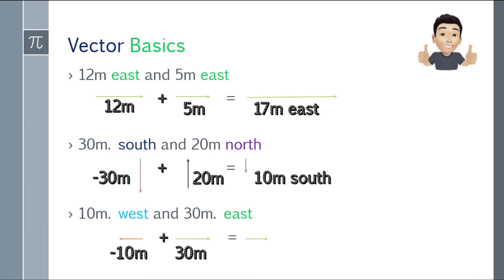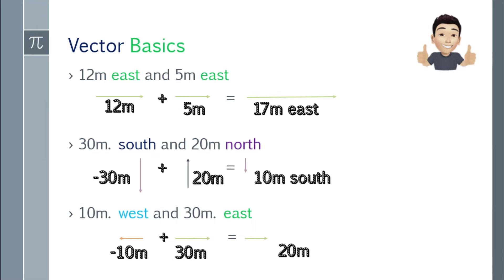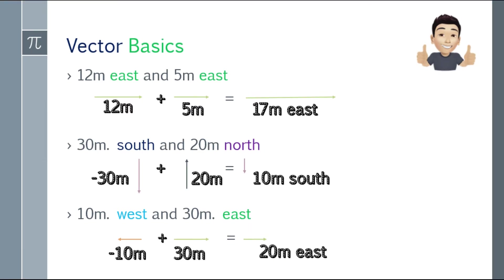Next, we have 10 meters west and 30 meters east. Remember, the west 10 meters needs to be negated — it will be negative 10. For 30 meters east, nothing changes, that's still positive. Negative 10 plus 30 becomes 20 meters. Since the answer is positive, that will be 20 meters east.